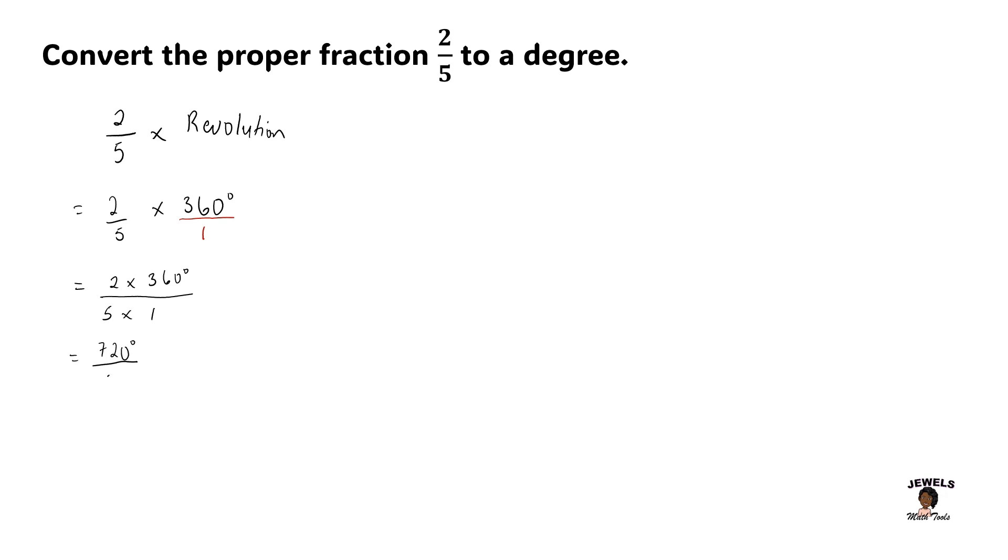And then 5 times 1 will equal 5. So we're now going to divide 720 degrees by 5.